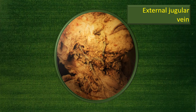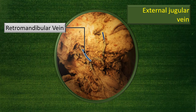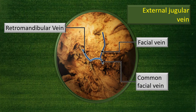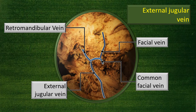We will now try to identify that vein shown in the clinical photograph — the enlarged vein. Here, the normal size of the vein is shown. You can see the retromandibular vein dividing into an anterior and a posterior division. The vein coming from the eye is the facial vein. The anterior division of the retromandibular vein joins the facial vein to form the common facial vein, which in turn forms the external jugular vein.